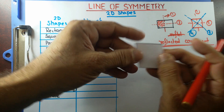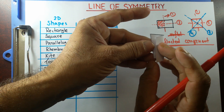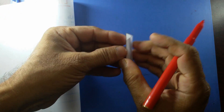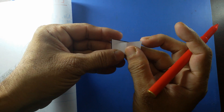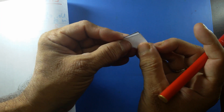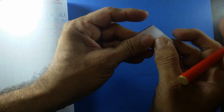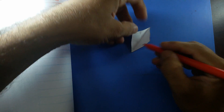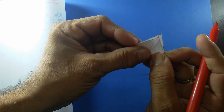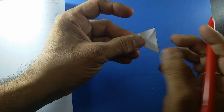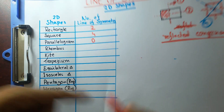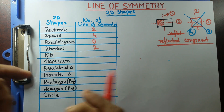What about the rhombus? Vertically — no, we don't have any. Horizontally — no. Diagonally — let's see. Yes! Diagonally, I got one line of symmetry. I'm guessing this other diagonal will also have a line of symmetry. Yes, there you go — another line of symmetry. So a rhombus has two lines of symmetry.